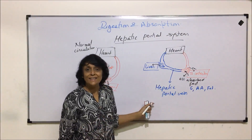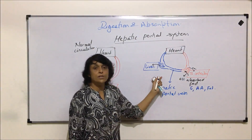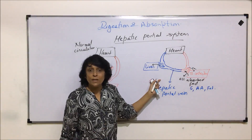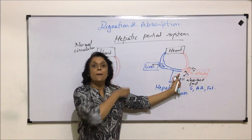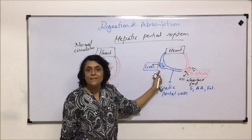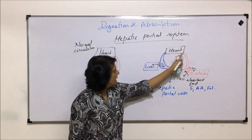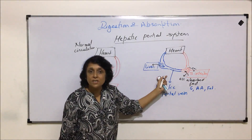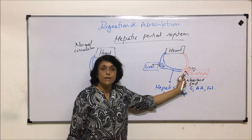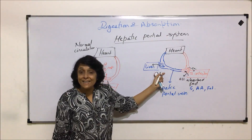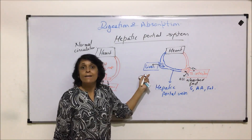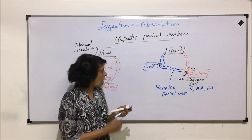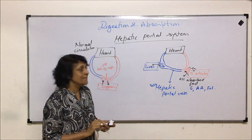The portal system can be defined as a system in which a blood vessel breaks into a second set of capillaries in a second organ. In normal circulation there is only one set of capillaries. In the portal system, the vein formed from the first set of capillaries breaks into a second set of capillaries in a specific organ — the liver — where it offloads all the absorbed food. This is the hepatic portal system.